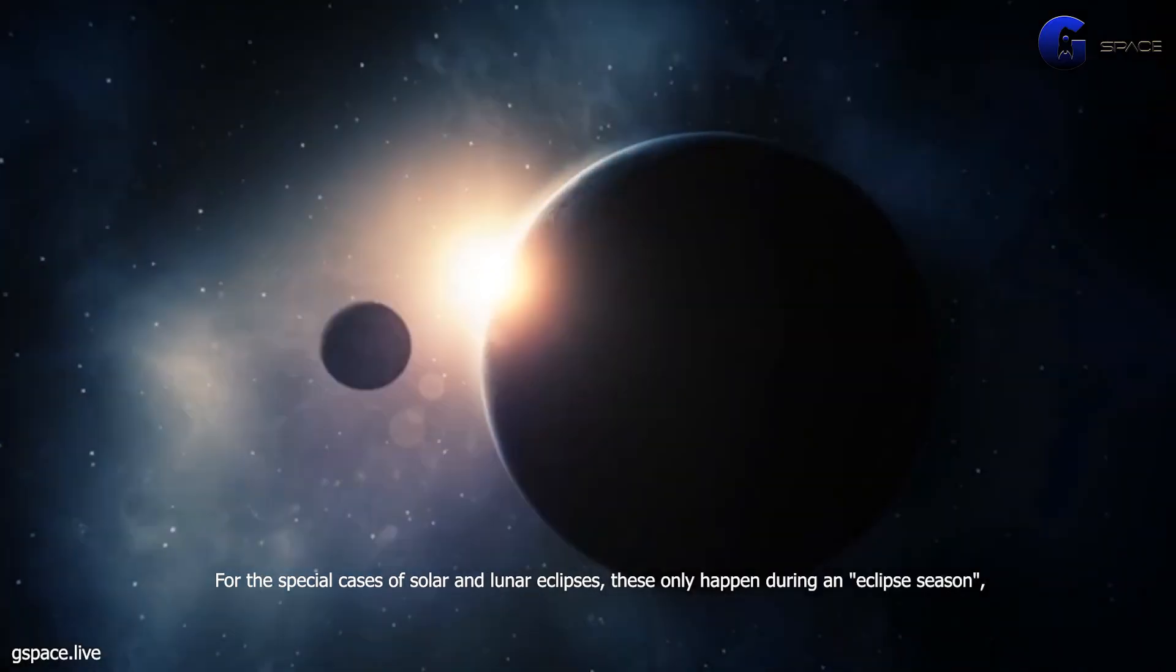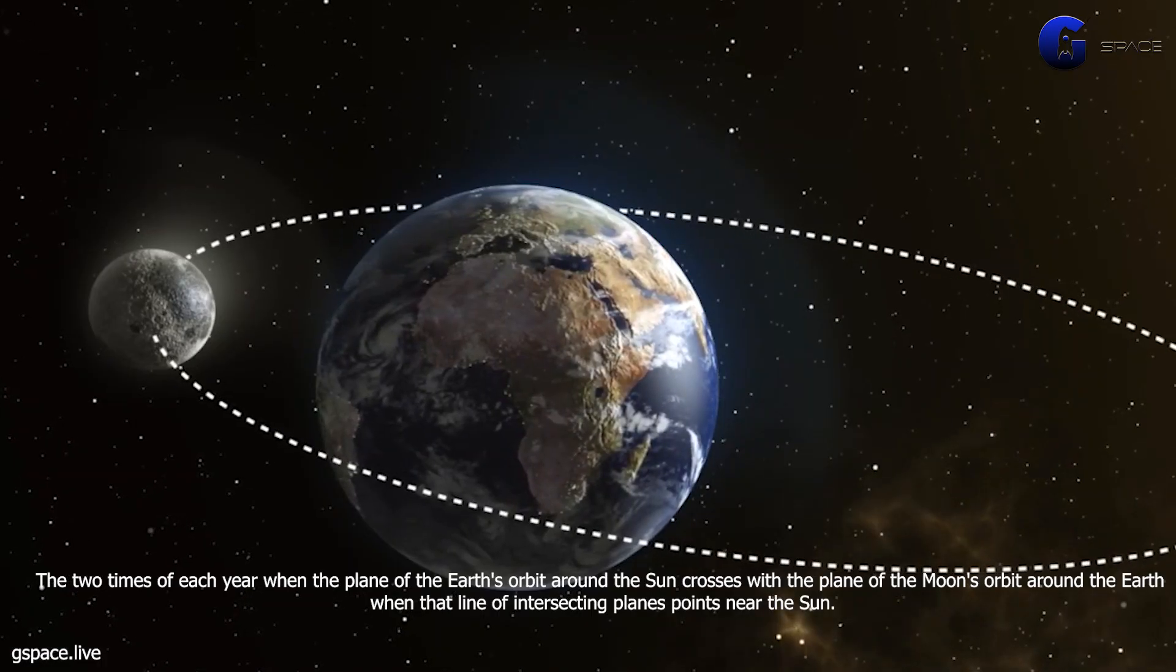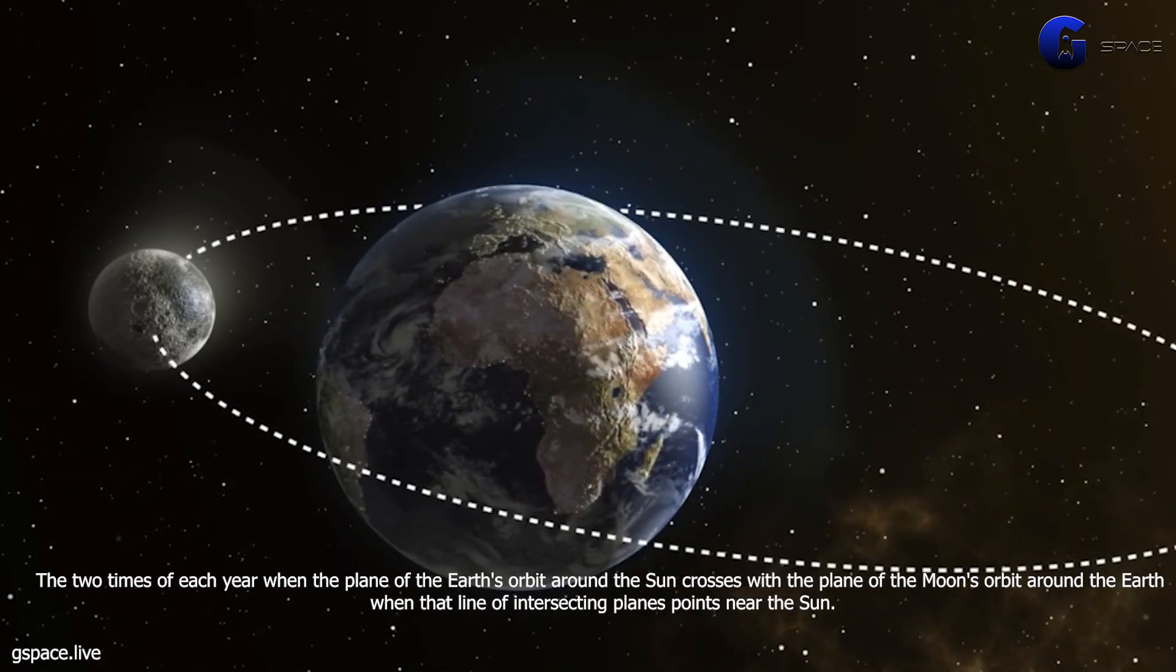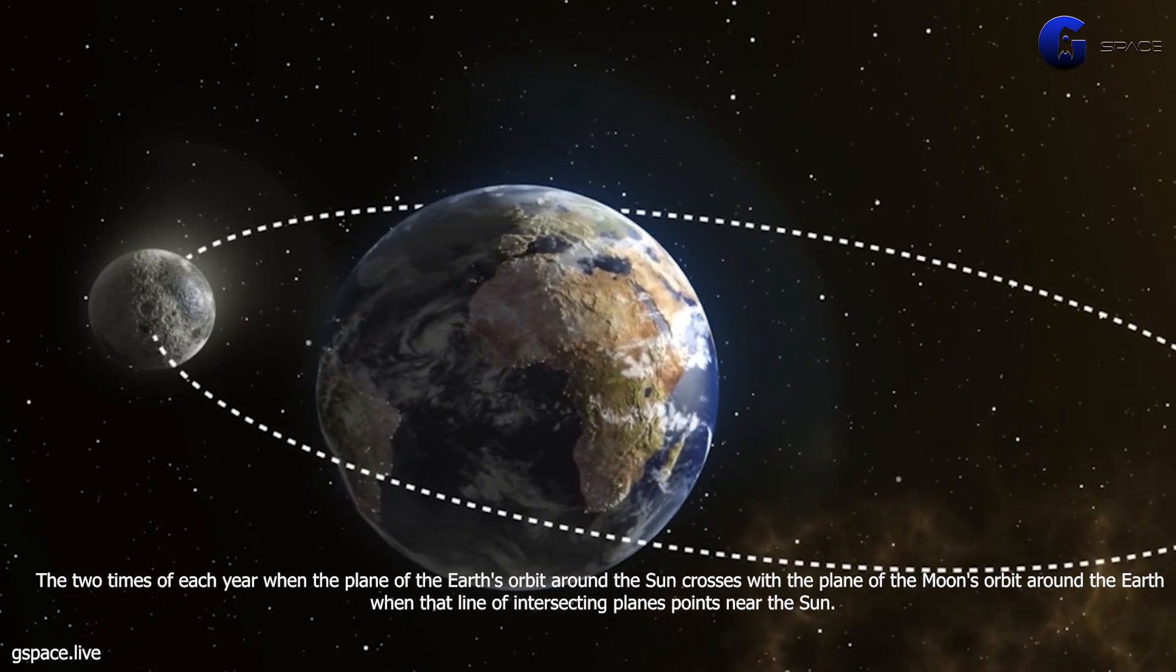For the special cases of solar and lunar eclipses, these only happen during an eclipse season, the two times of each year when the plane of the earth's orbit around the sun crosses with the plane of the moon's orbit around the earth, when that line of intersecting planes points near the sun.